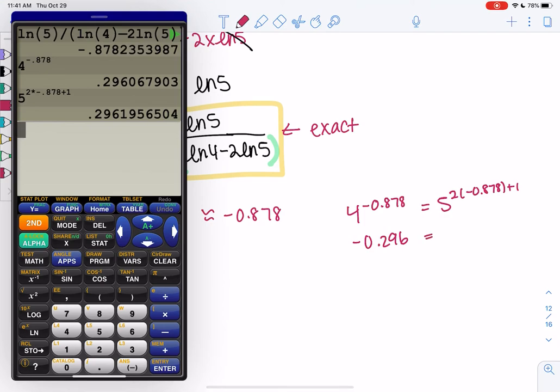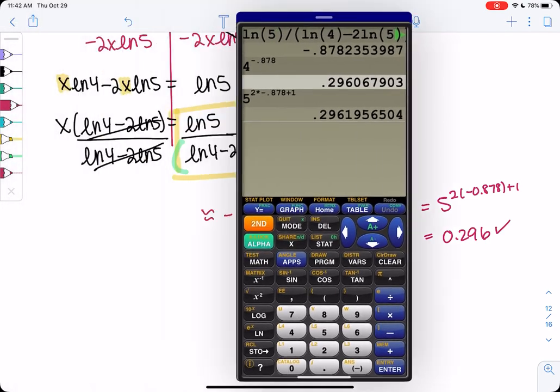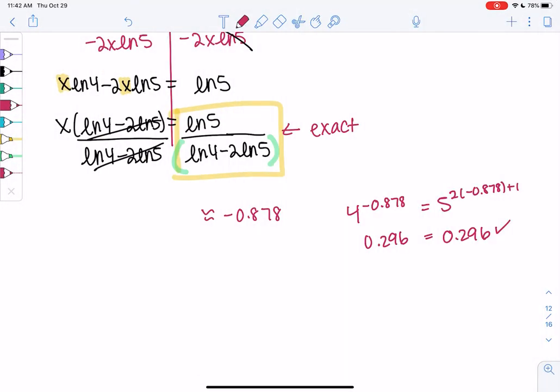So it's always good to check your answer. Yeah, and we get, sorry, both of them were positive 0.296. They're slightly different because of rounding, but they're close. But ideally, when we write our answer down, we're going to leave it in the exact form.